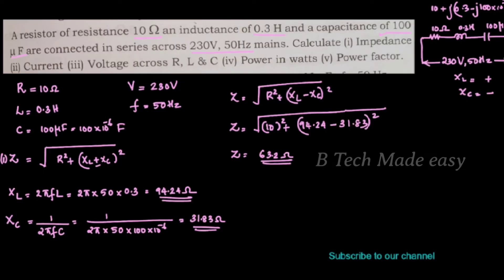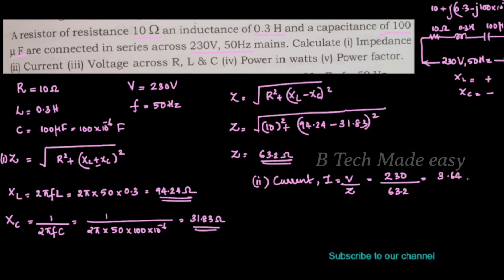We have to find the value of current. Current I is equal to V by Z, which is equal to 230 volt divided by 63.2 ohm. This is equal to 3.64 ampere.